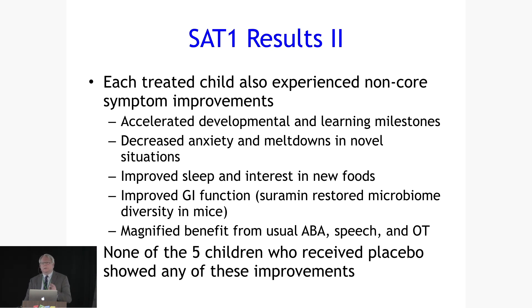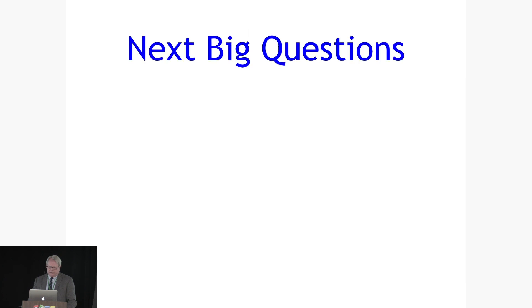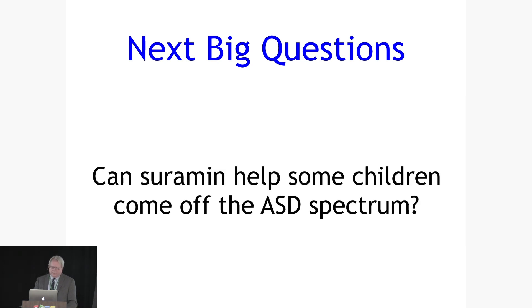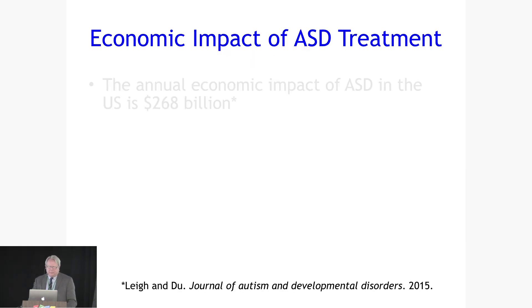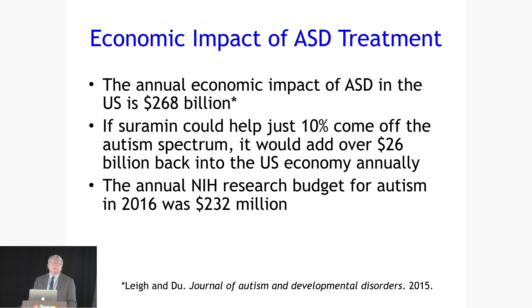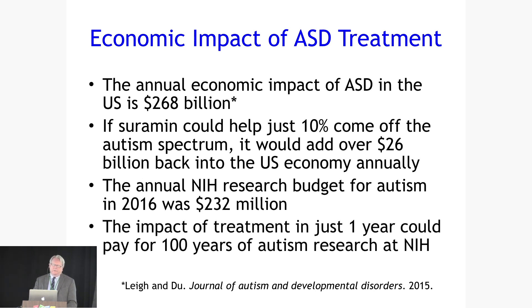None of the children who received placebo showed any of those improvements. The big question is whether Suramin is safe and effective for the treatment of autism and can help some children come off the ASD spectrum. The economic impact: ASD has an impact of 268 billion dollars on the U.S. economy every year. If just 10% of children and adults were improved, that would re-inject approximately 232 million dollars into the economy — equivalent to 100 years of what NIH spends on autism research, just from one year of an effective drug.